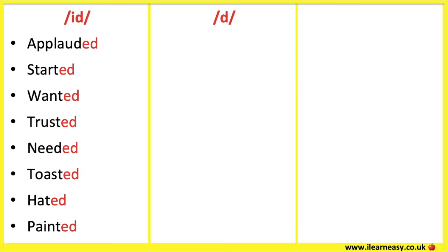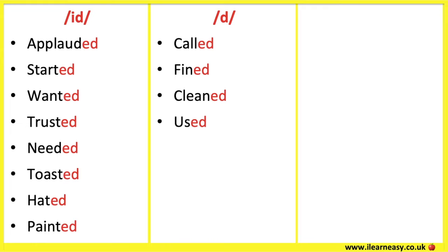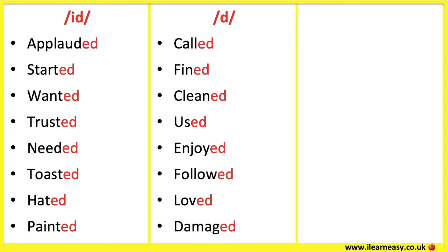The letters E-D make the 'd' sound when the root word ends with letters that are voiced. These include the letters G, L, N, R, S, W, Y, V, Z. For example: called, find, cleaned, used, enjoyed, followed, loved, damaged.